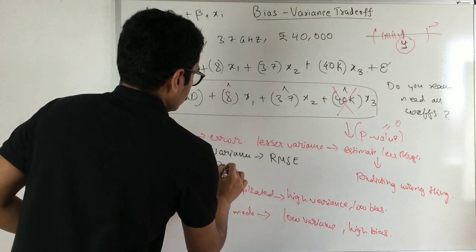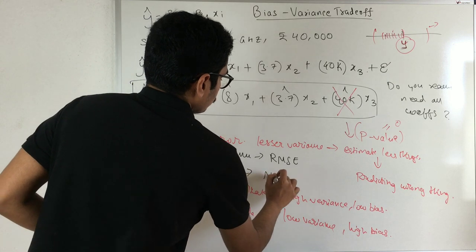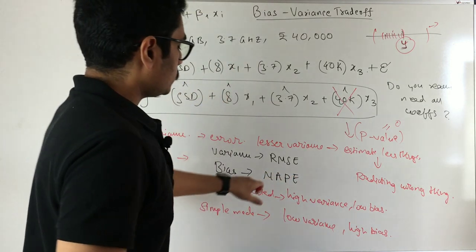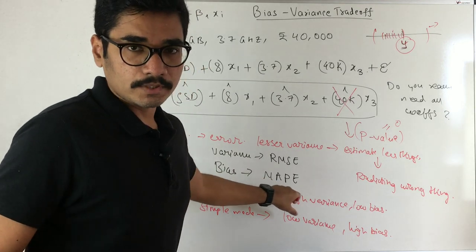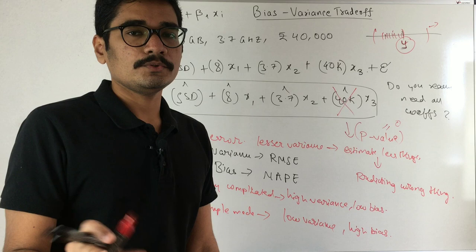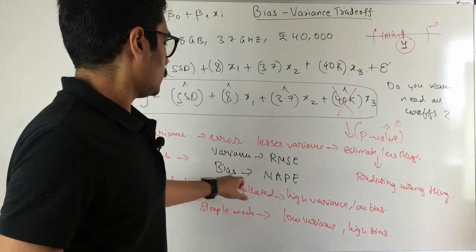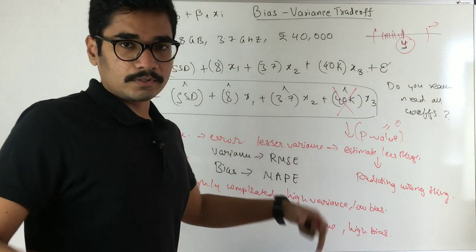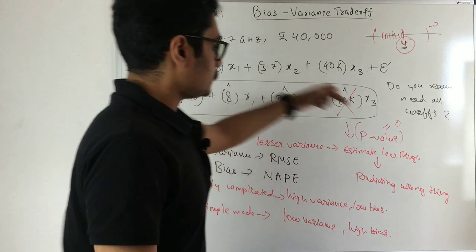And for the bias, you usually have something called MAPE. That is mean absolute percentage error. In this, you basically multiply with 100, so you get a percentage estimate. This is the mathematical estimate of bias and variance.